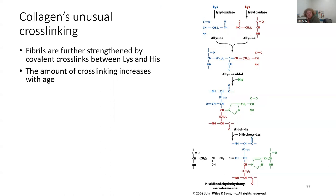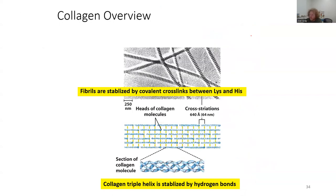Collagen has unusual crosslinking: fibrils are further strengthened by covalent crosslinks between lysine and histidine residues. The amount of crosslinking increases with aging, which limits collagen's flexibility. Fibrils are stabilized by covalent crosslinks between lysine and histidine residues, and the collagen triple helix is stabilized by hydrogen bonds. So in both collagen and keratin we have covalent linkages and hydrophobic interactions, but hydrogen bonds are present in collagen and not in keratin.